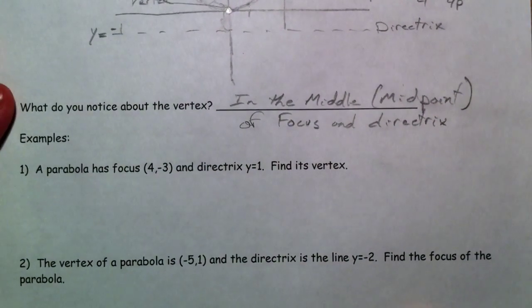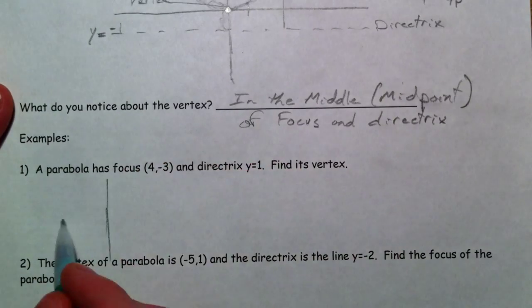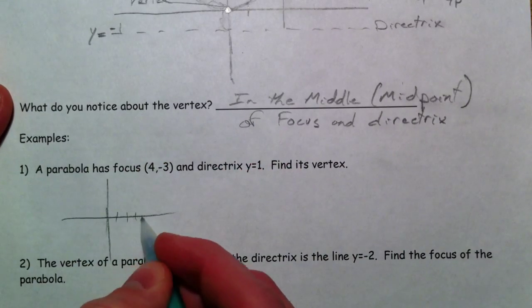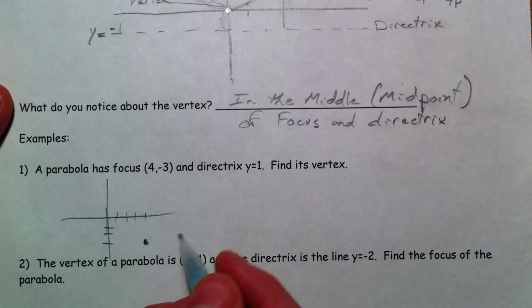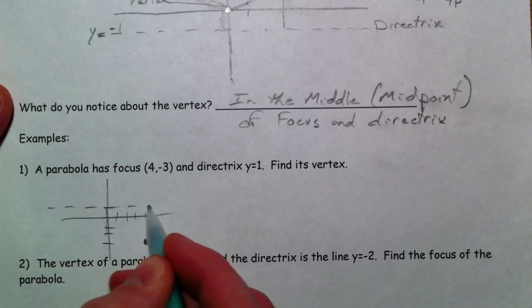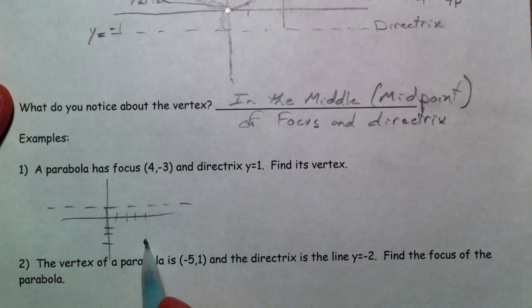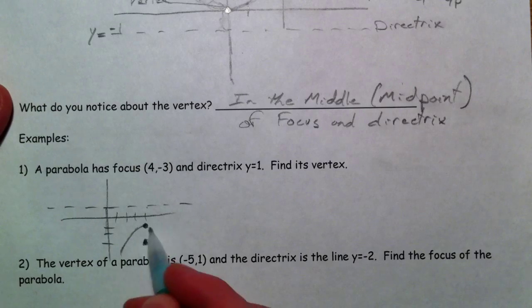So a parabola has a focus of (4, -3) and a directrix of y equals 1. So that would be up here. So if this is the focus and this is the directrix, the vertex has to be right in the middle of those two.